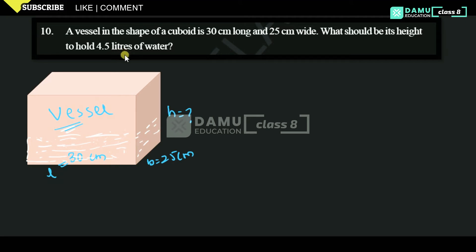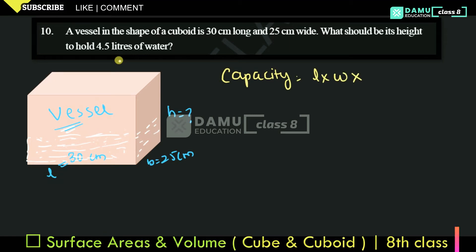So we need to hold 4.5 liters of water, what should be the height? Let's take what you can take here is liquids. So let's take capacity equals length times width times height.